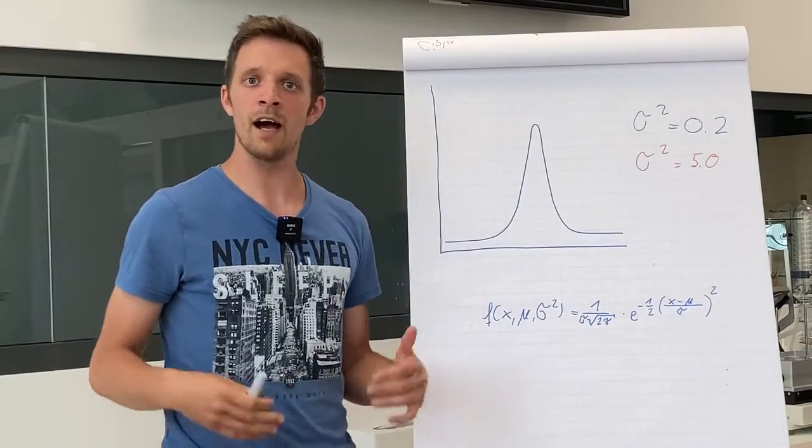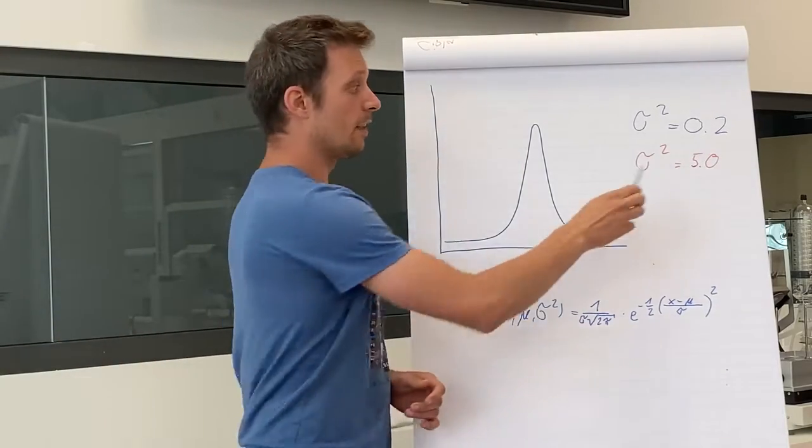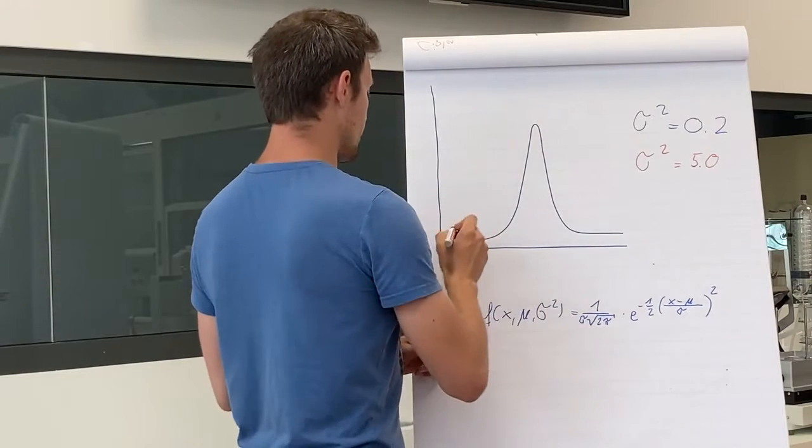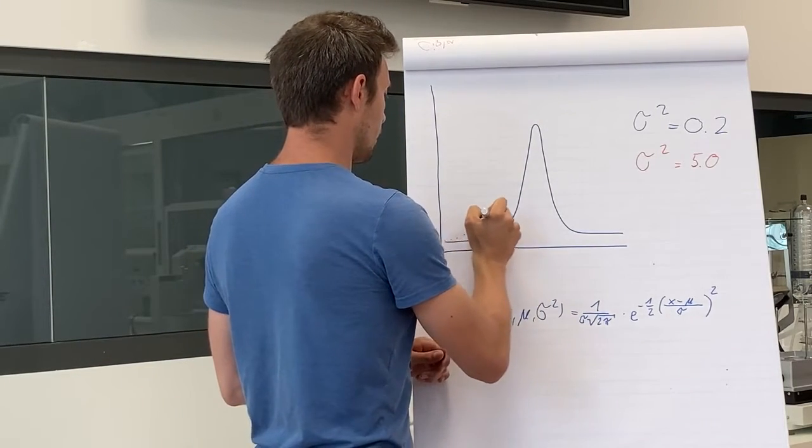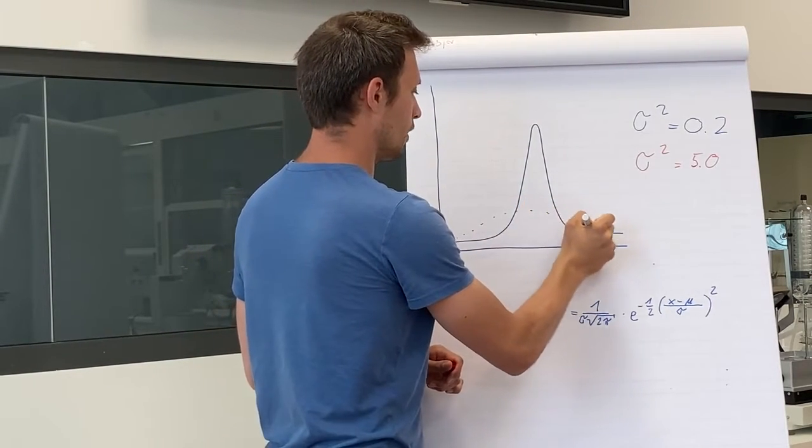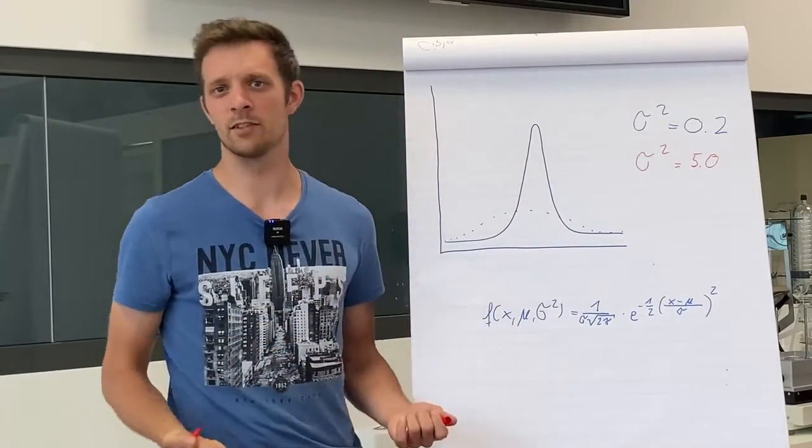Another example for high variance, for example 5, has this peak shape. But let's be honest, this is too much, right?